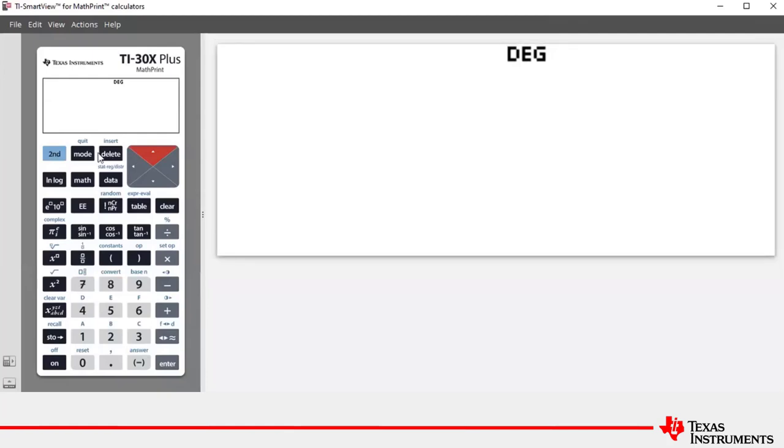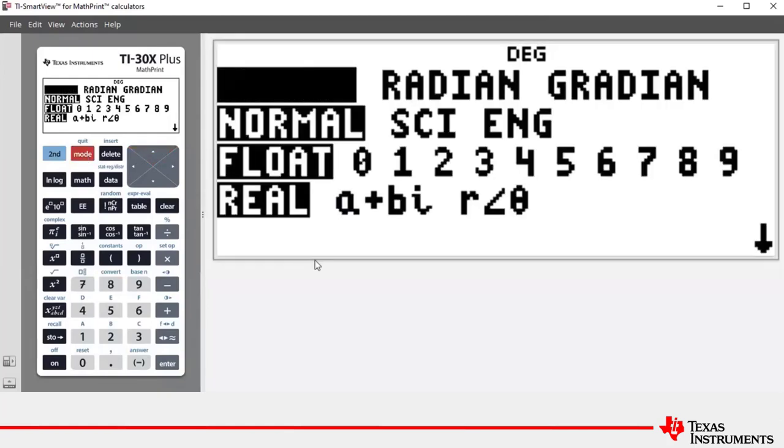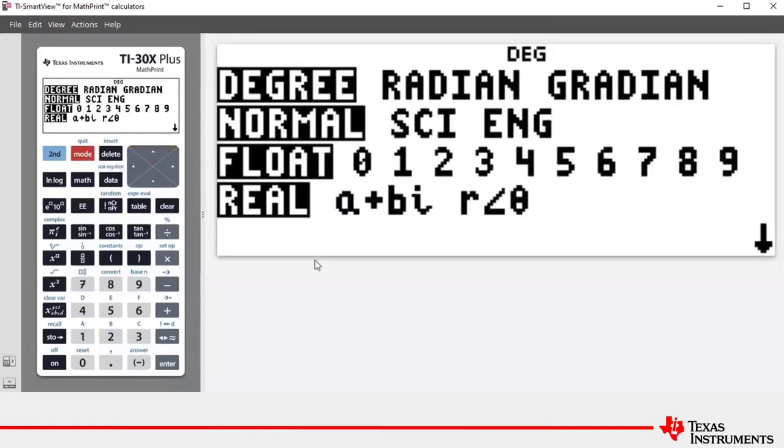The other important thing is to check our mode. We press mode, and down in row four we can see three possibilities. We can work in real mode, in a plus bi, which is rectangular or Cartesian form, or we can work in r theta form, which is polar form.